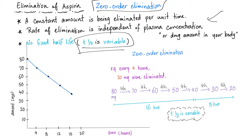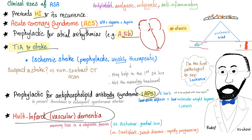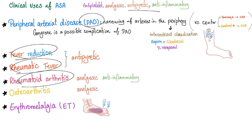Medical uses or indications of aspirin: myocardial infarction, acute coronary syndrome, AFib, TIA and stroke. Prophylactic for antiphospholipid syndrome, vascular dementia, peripheral arterial disease. Fever reduction because it's antipyretic. Rheumatic fever, rheumatoid arthritis, osteoarthritis, erythromelalgia. The word 'algia' means pain — that's why aspirin is analgesic.